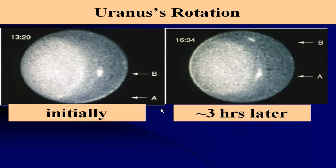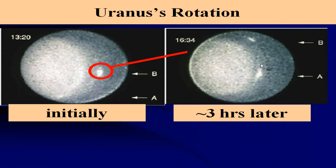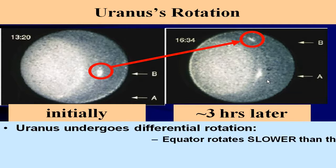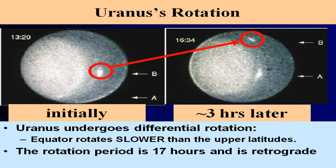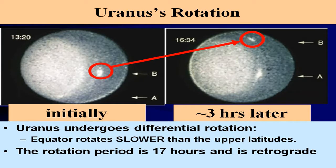Uranus' rotation is well known. Uranus is tipped over, and we can observe a spot moving along its equator. Here's how it looks three hours later — it has moved a significant angle. The equator rotates slower than the upper latitudes, and the rotation period is 17 hours and retrograde. So Uranus rotates retrograde, faster than Earth but slower than Saturn and Jupiter. Also, the equator is slower than the poles, which is the opposite of Saturn and Jupiter.